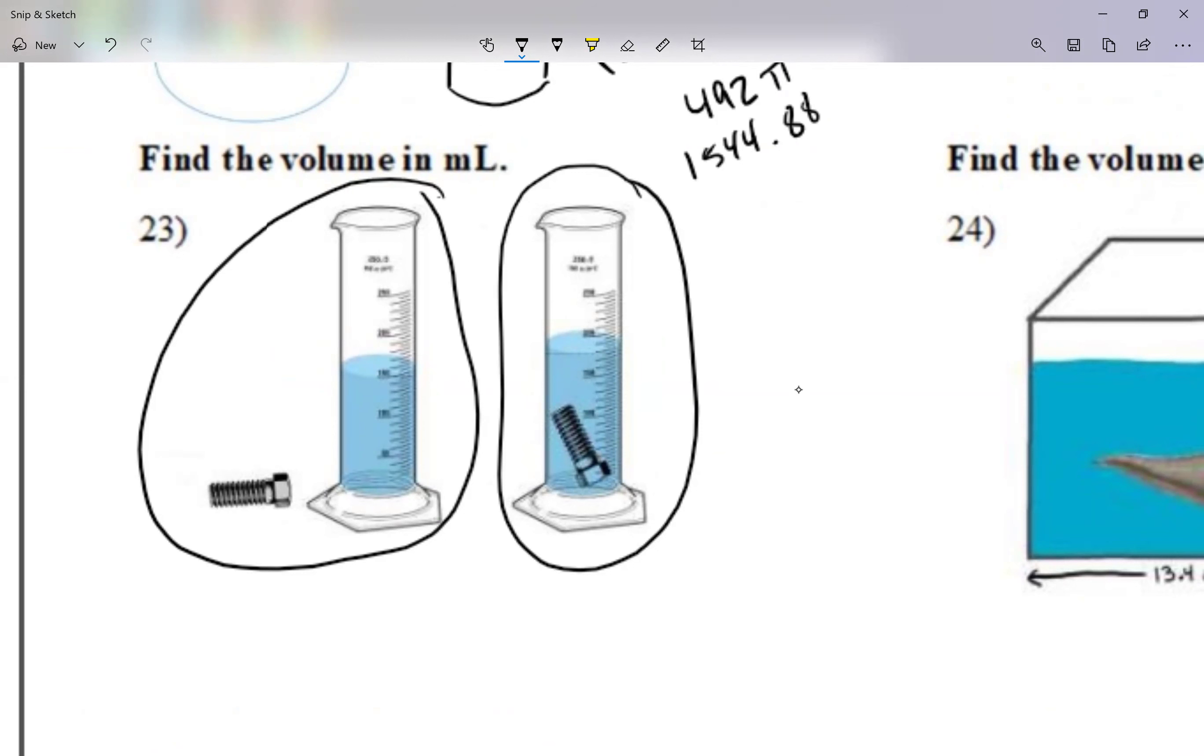We call this displacement, volume of displacement, because the level of the water changes. I know my numbers here for my example are not that clear – we cannot read them that well – but when the water had no screw, I'm going to say this thing had 150 milliliters. We're measuring this in milliliters.